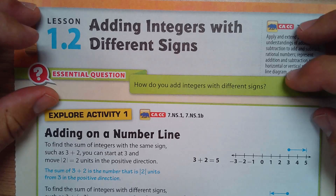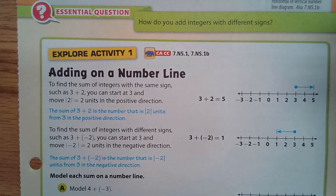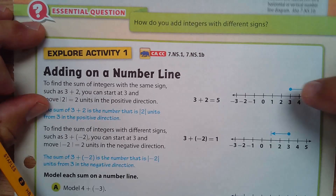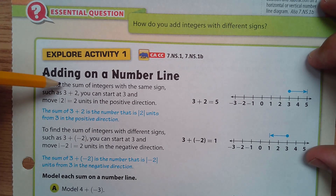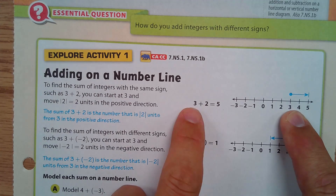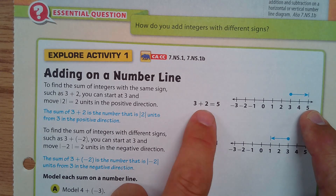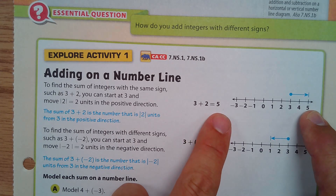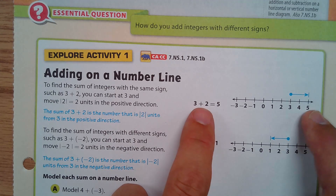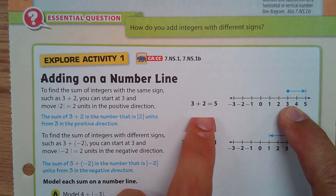Adding integers with different signs. When adding on a number line, to find the sum of integers with the same signs such as three and two, you can start at three and move two to the right to arrive at five. So they're modeling this addition problem on a number line.